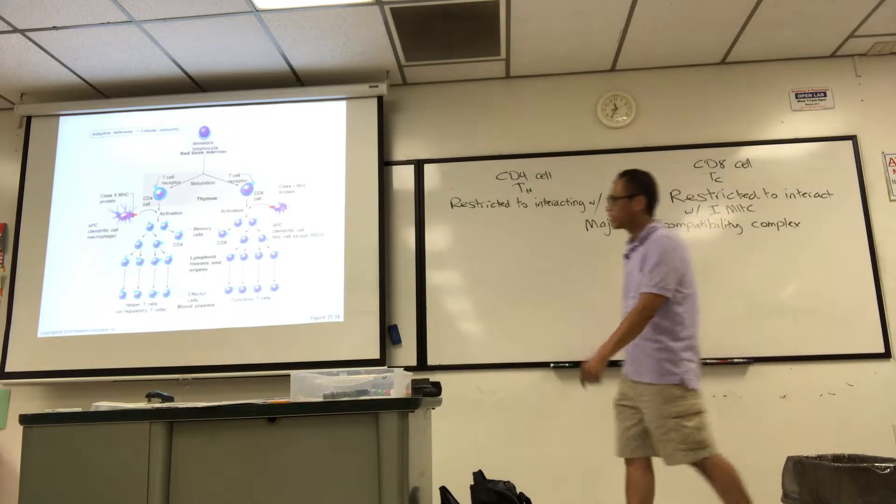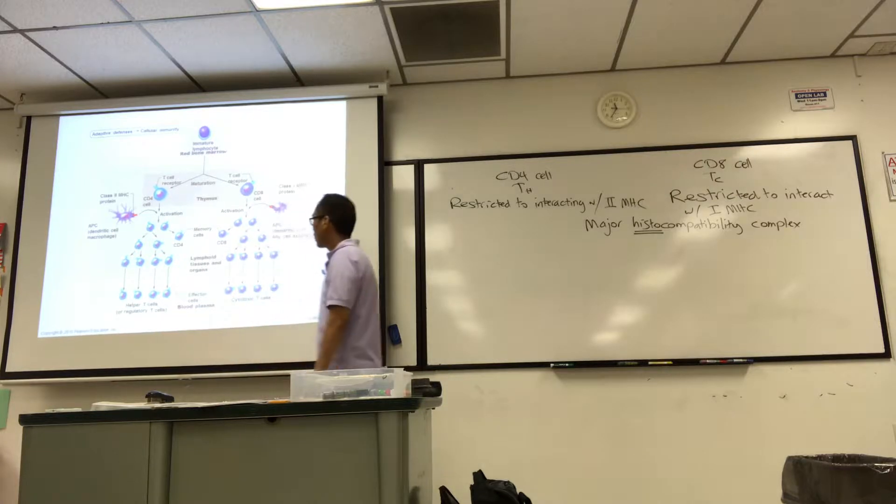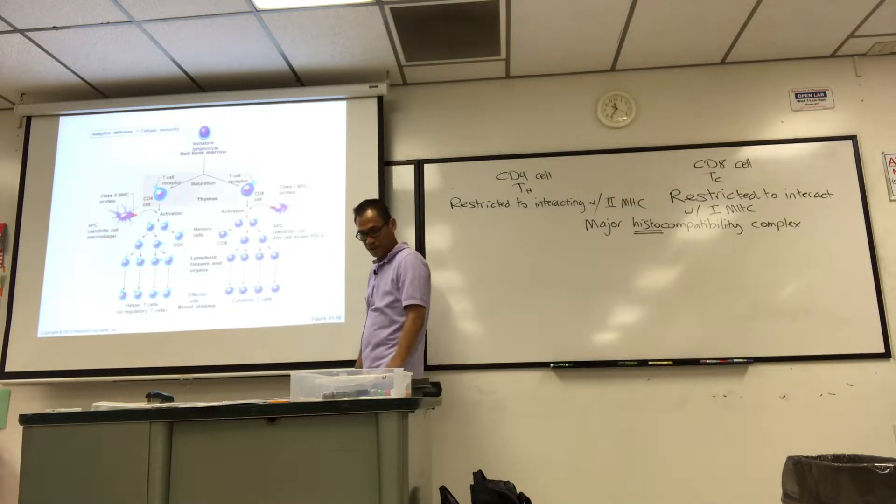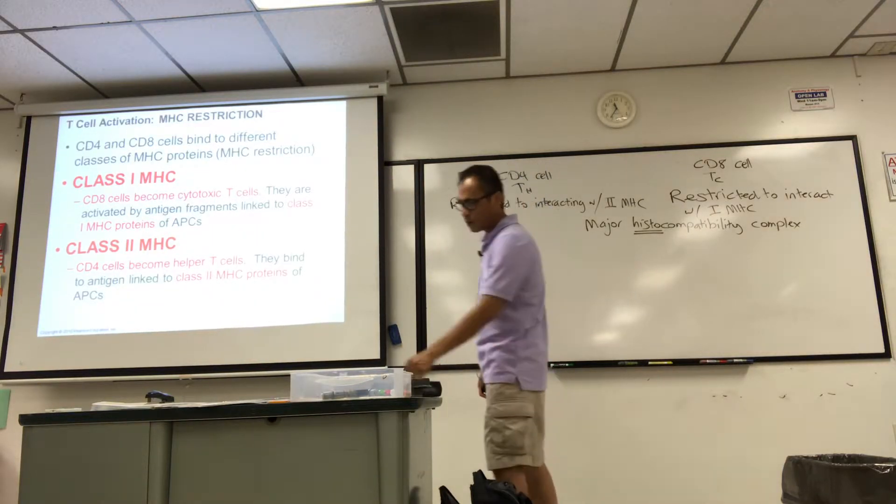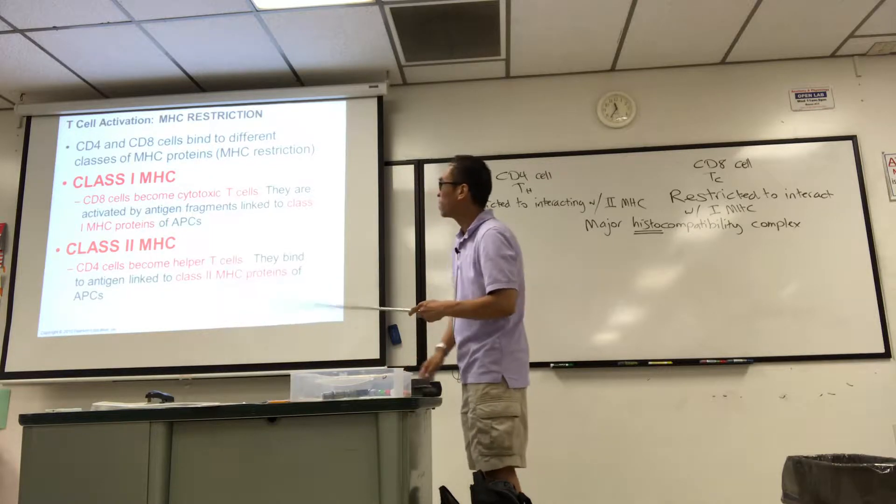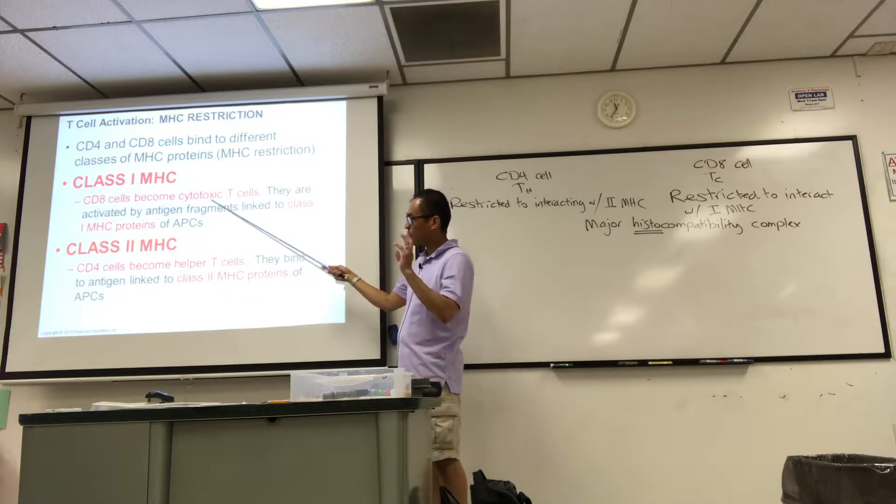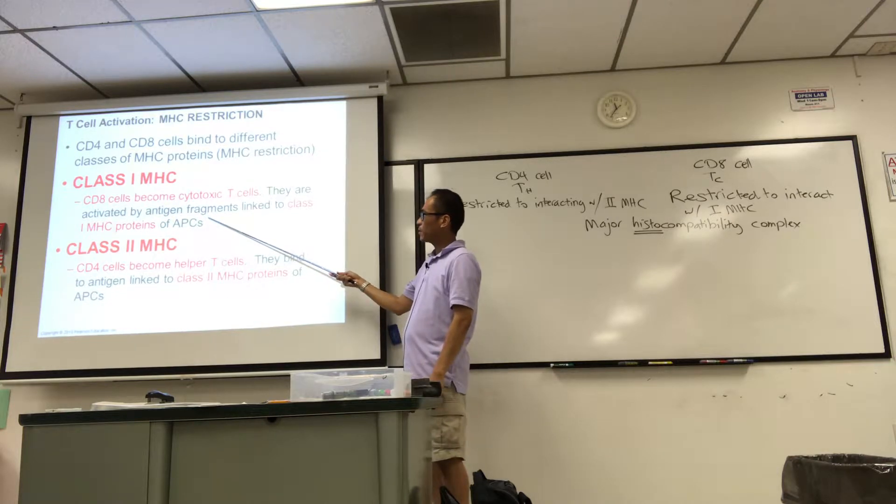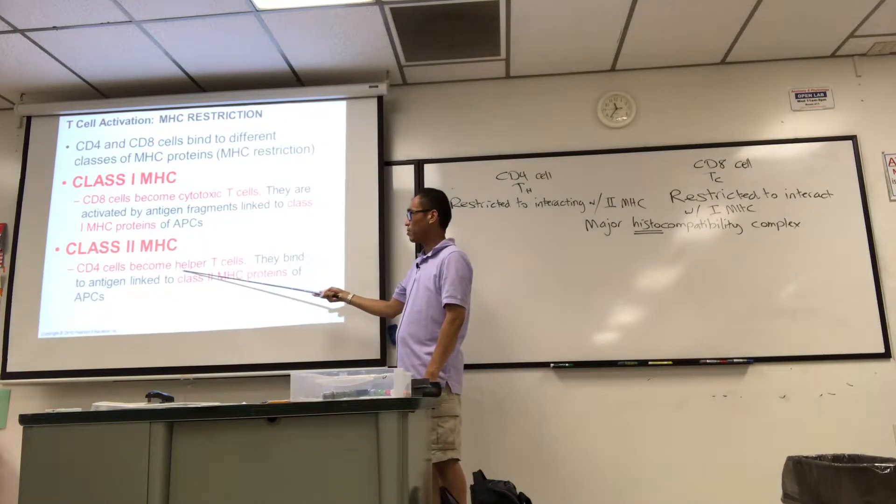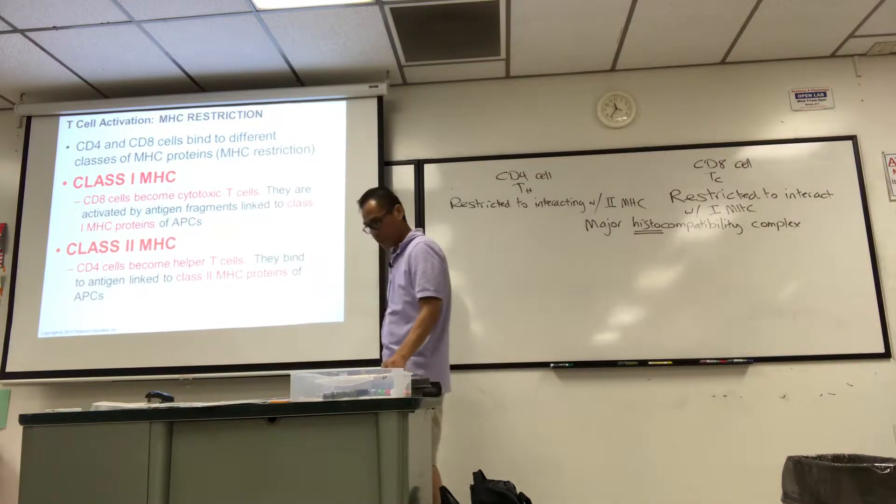So what we see here is that you interact with class II, you get your helper T's. You interact with class I, you get your cytotoxic T cells. The MHC require a little more explanation. Class I MHC - the CD8 cells become cytotoxic T cells. Remember, class I CD8. They are activated by antigen fragments linked to class I MHC's of APCs. CD4 cells become the helper T's, linked to the class II MHC. Just keep that straight in your head.